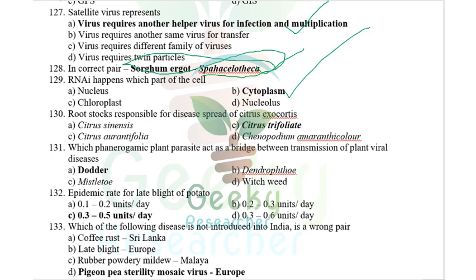The rootstock responsible for the spread of citrus exocortis viroid is citrus trifoliate. The indicator plant used for citrus exocortis is sweet orange. The scientific name of sweet orange is Citrus sinensis.